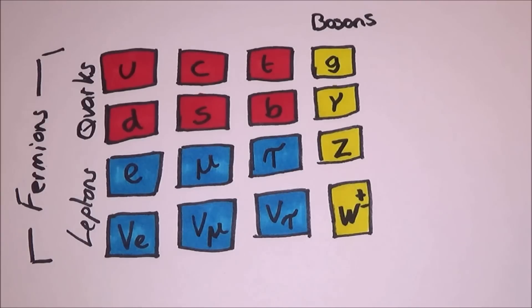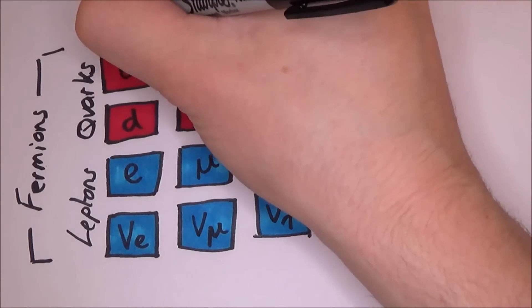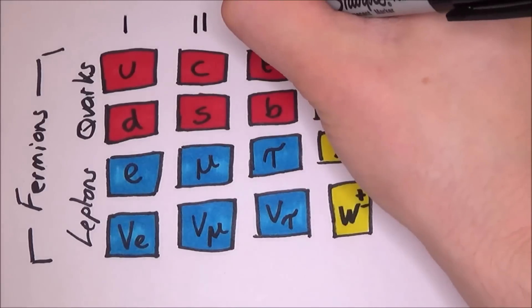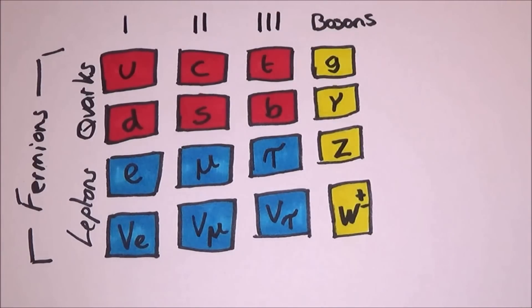Fermions are split into three generations. Generation one contains the up, the down, the electron and the electron neutrino. Generation two contains the charm, the strange, the muon and the muon neutrino. Generation three contains the top, the bottom, the tau and the tau neutrino.